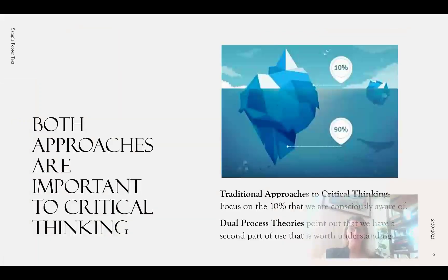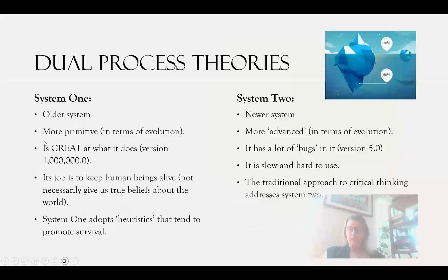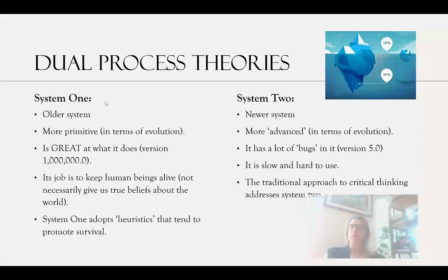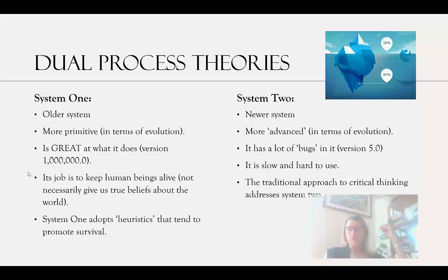Let me tell you a little bit about what a dual process theory is. There's an evolutionary explanation for these different ways of thinking, and that is that our System One developed first. We share System One with other mammals. The system is very old, more primitive in terms of evolution, and it is really, really good at what it does. If you think of it like a computer, it's on version 1 million point 0 — so it's very efficient, very fast. And this is key: its job is to keep us alive long enough to reproduce and give our offspring good chances at surviving.